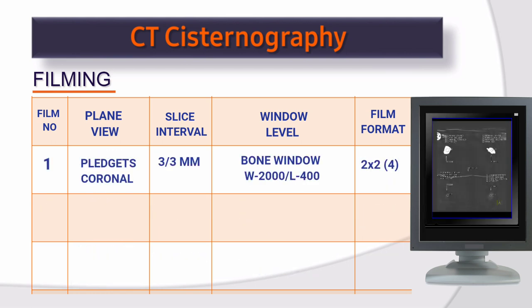Paper print 1 — plain view, pledget coronal scan. Slice interval: 3×3 mm. Window level: bone window — window width 2000, window level 400. Paper print format: 2×2, 4 images.